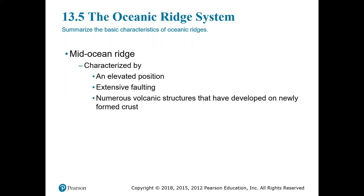We have been able to identify these ridge systems through bathymetric calculations on the ocean floor, core samples from deep-sea drilling, and submersibles like Alvin, pictured on page 419, which can reach depths of about 15,000 feet. Oceanic ridges are characterized by extensive normal and strike-slip faulting, earthquakes, high heat flow, and recent volcanism — because they are along divergent plate boundaries.